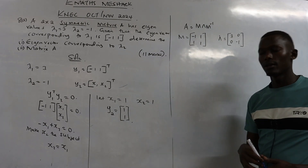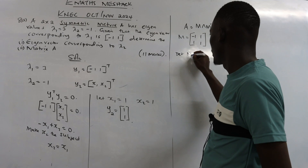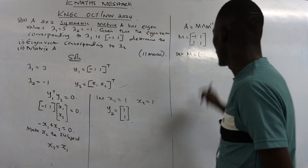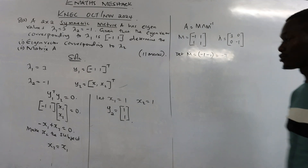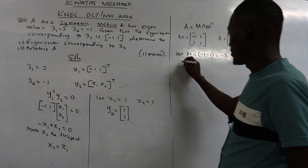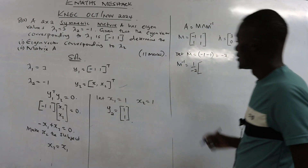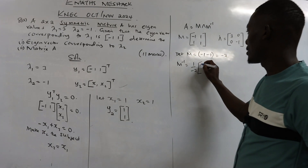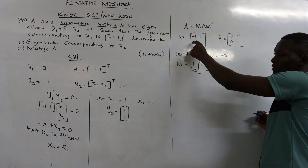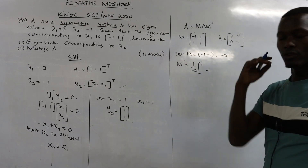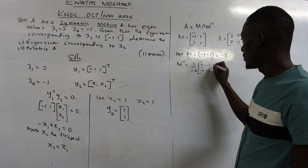Now we find M inverse using: (1 / det(M)) times the adjugate. The determinant of M is (1)(-1) - (1)(1) = -1 - 1 = -2. So M inverse equals (1 / -2) times the matrix with the main diagonal interchanged — 1 and -1 — and the minor diagonal elements negated, giving -1 and -1.